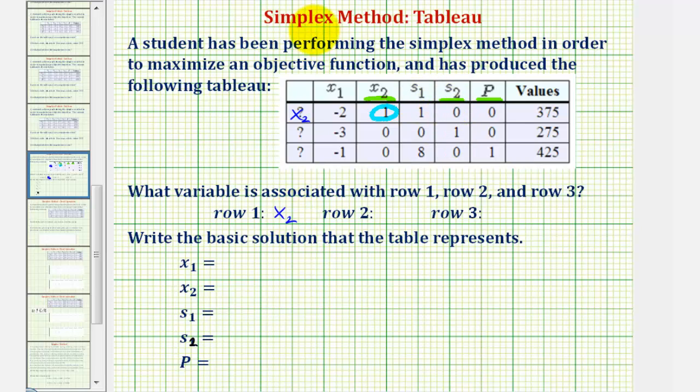Looking at the column s sub two, notice how the one is in the second row. So the second row is associated with s sub two.